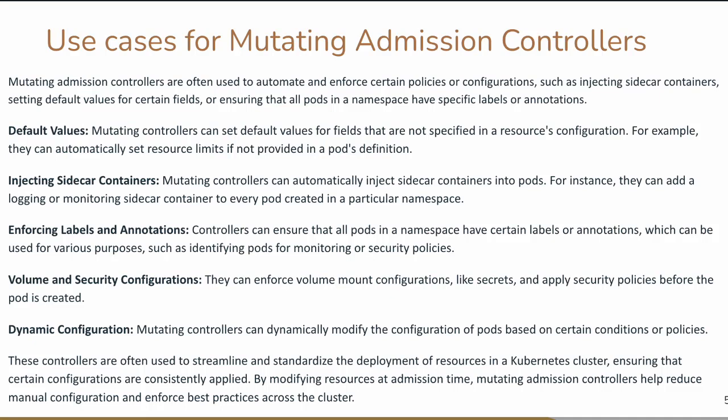Another use case is setting default values. A mutating admission controller can set default values for fields which are not specified. For example, it can automatically set the resource limit if not provided. Suppose someone forgets to specify how much CPU or memory should be allocated to the pod — in that case, a default value will be picked up and applied. This is an example of a mutating admission controller because it changes your request so that the default values override it and the appropriate amount of CPU and memory is allocated.